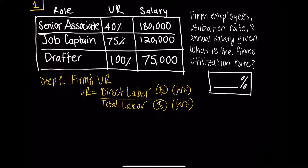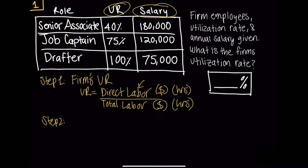If you want to know more about utilization rate, there is a separate video in the link description below. Step two: I need to know direct labor if I'm going to find utilization rate. Let's figure out the direct labor amount in dollars. Here we're given a utilization rate and a salary. To get the actual utilization rate in terms of dollars — the amount from that person's salary that went towards charging the client — we take the utilization rate and multiply it by the salary of that person to get their direct labor in dollars.